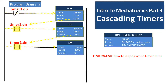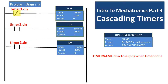Next, timer2 will finish, which will activate the timer2.done normally open contact. This will start timer3, and timer3 will run for 3 seconds. After timer3 is done, it will activate the timer3.done normally closed contact, which will briefly open the circuit when activated and reset timer1. It will then cascade all of the timers and reset them to 0, then become normally closed again and start timer1. Then the process repeats.